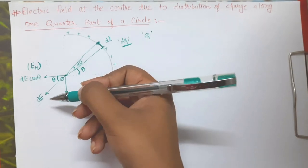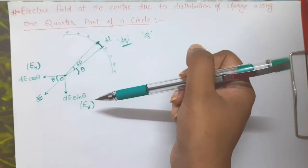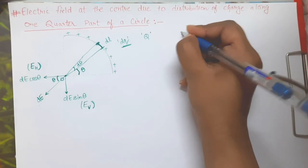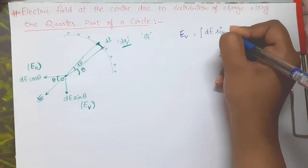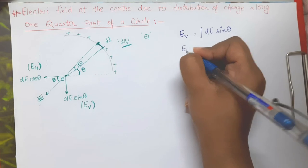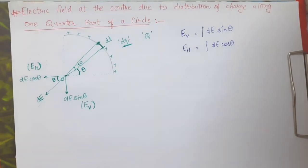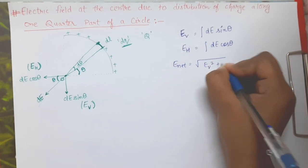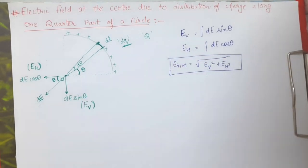We are going to find out their corresponding electric fields and their vertical and horizontal components. The summation of all those vertical and horizontal components will be Ev and Eh respectively. So Ev will be the integration of dE·sinθ, and Eh will be the integration of dE·cosθ. The net field Enet will be the square root of Ev² + Eh². We need to find Ev and Eh, substitute the values, and we can get Enet.